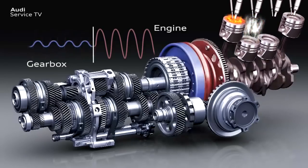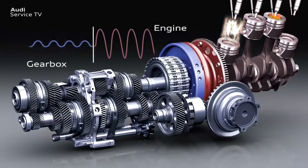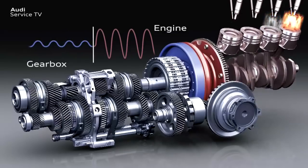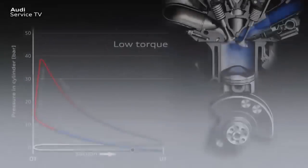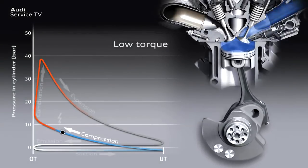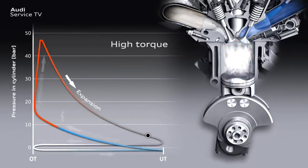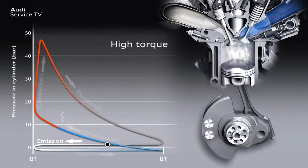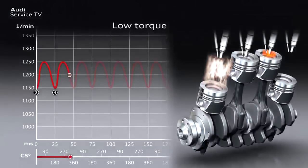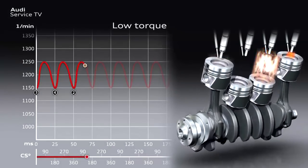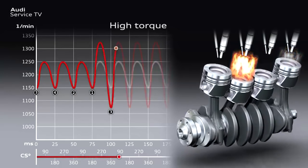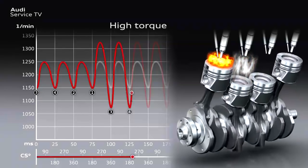To date, the torsional vibrations could be reduced with dual mass flywheels to the extent that comfortable driving at low engine speeds was possible. Alongside engine speed and number of cylinders, engine rotational speed irregularities greatly depend on how much torque the engine can produce at low engine speeds. Modern petrol and diesel engines which produce a high level of torque at a low engine speed cause greater torsional vibrations than engines that produce less torque at the same engine speed.